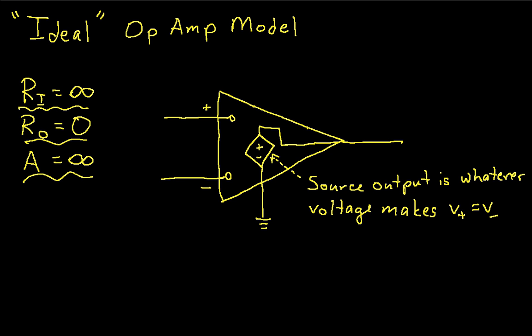But the idea is that these three conditions, and particularly making the gain infinite, can be interpreted as the source output will be whatever it needs to be in order to make the voltage at the non-inverting input, this guy, equal to the voltage at this, at the inverting input. And so you may think that this is not an obvious thing, and it actually is a concept that tends to be a little difficult to get straight, but once you do, it makes analysis of op-amp circuits actually much easier than they otherwise would be.